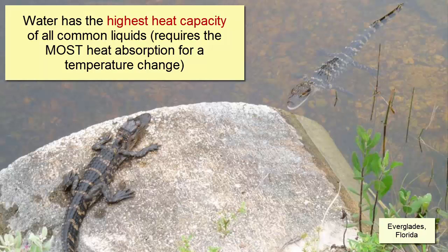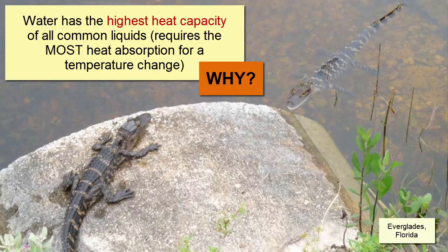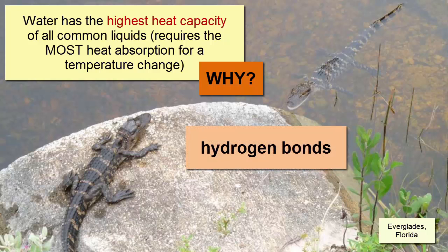Water has the highest heat capacity of all common liquids. That means it has the capacity to accept a lot of heat, or kinetic energy, before its temperature rises. Why? Those hydrogen bonds. They keep water molecules locked together in a loose bonding, which means it takes more energy transfer before their velocity can increase.